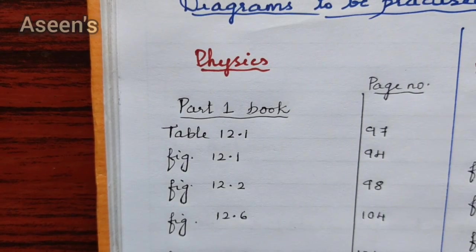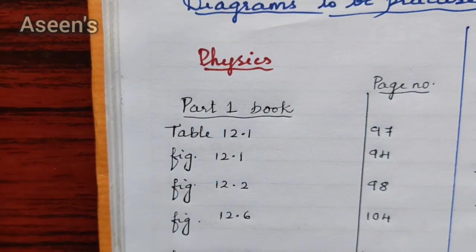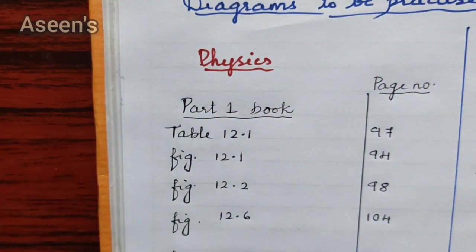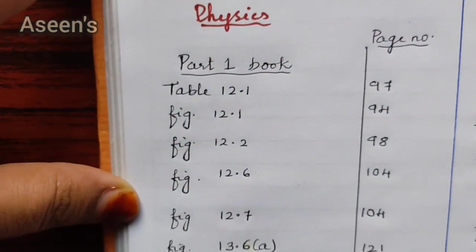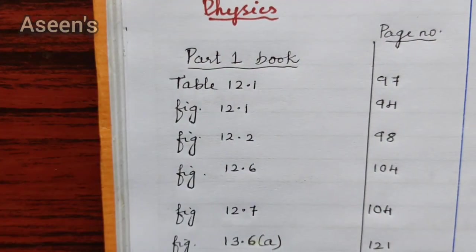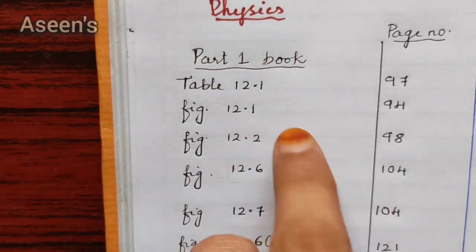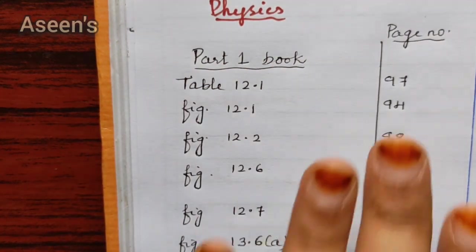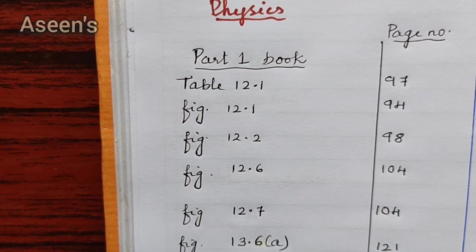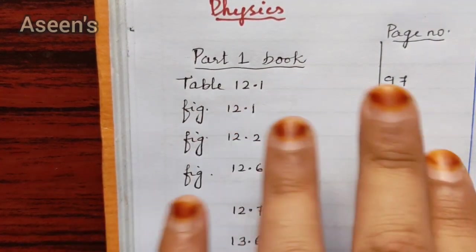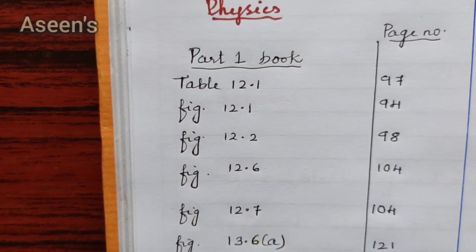I have divided all the diagrams into three parts: physics, chemistry, and biology. Starting with physics — I have further divided them based on Part 1 and Part 2 books along with page numbers to make it easier to access. The first one from Part 1 book is Table 12.1 on page number 97.